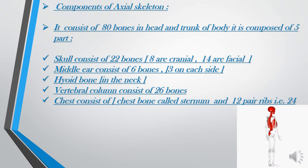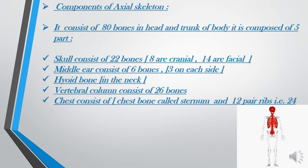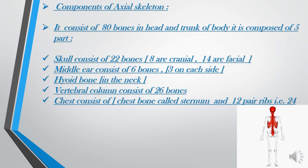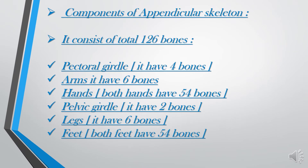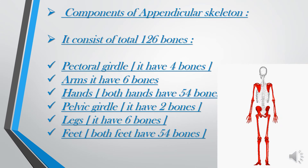Components of the axial skeleton: it consists of 80 bones in the head and trunk of the body. It is composed of five parts. The skull consists of 22 bones — 8 are cranial while 14 are facial. The middle ear consists of 6 bones, 3 on each side. The hyoid bone is in the neck. The vertebral column consists of 26 bones, while the chest consists of the sternum and 12 pairs of ribs, totaling 24 bones.